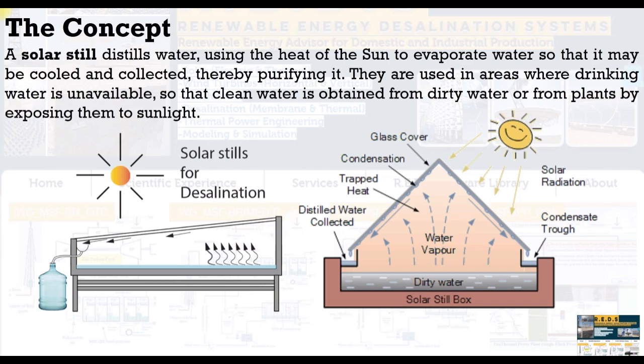Solar stills are used in areas where drinking water is unavailable, so that clean water is obtained from dirty water, brackish water, or from plants by exposing them to sunlight.